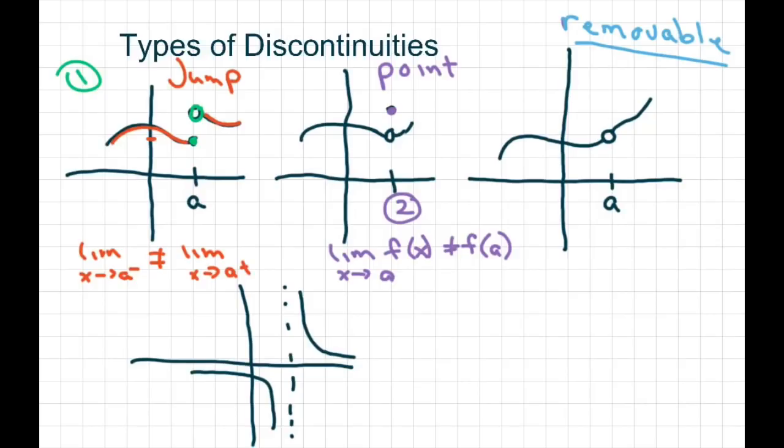And the last one is an essential discontinuity. This occurs when we have a rational function and it's undefined in the denominator at a certain point. So the four different types are called jump, point, removable, and essential.